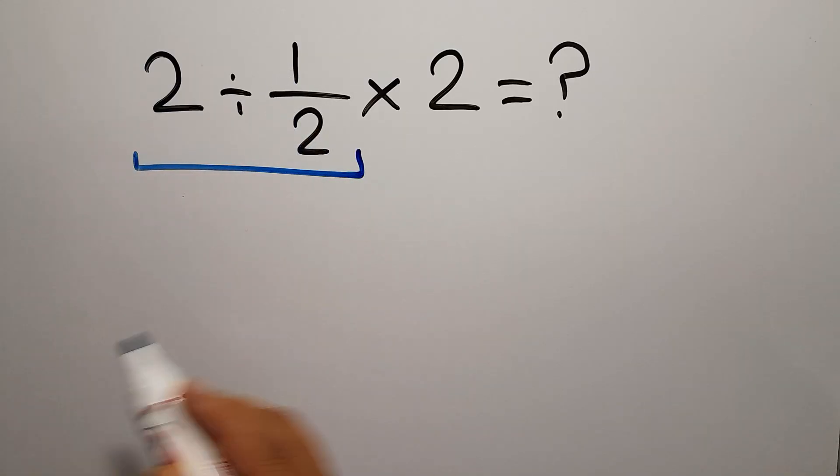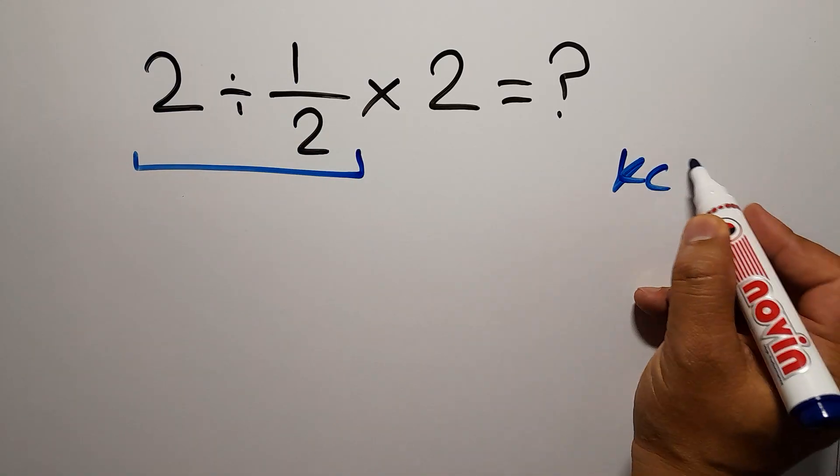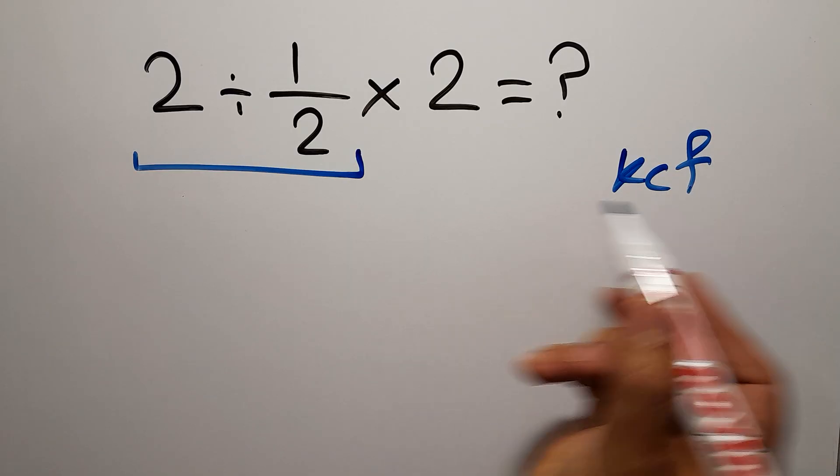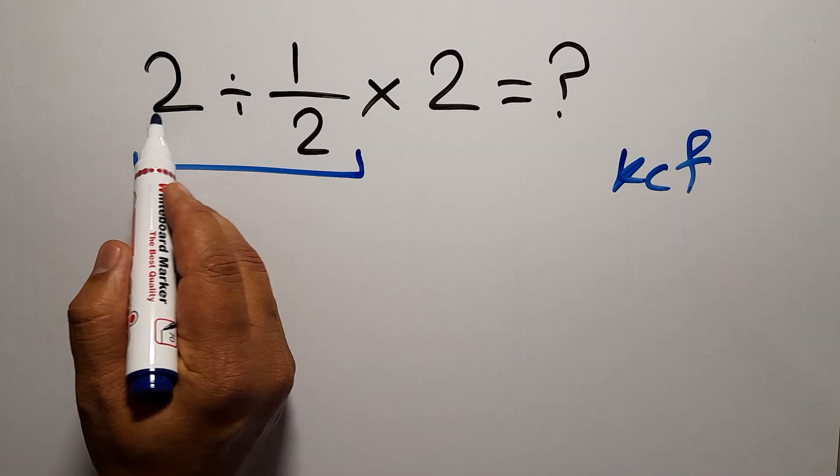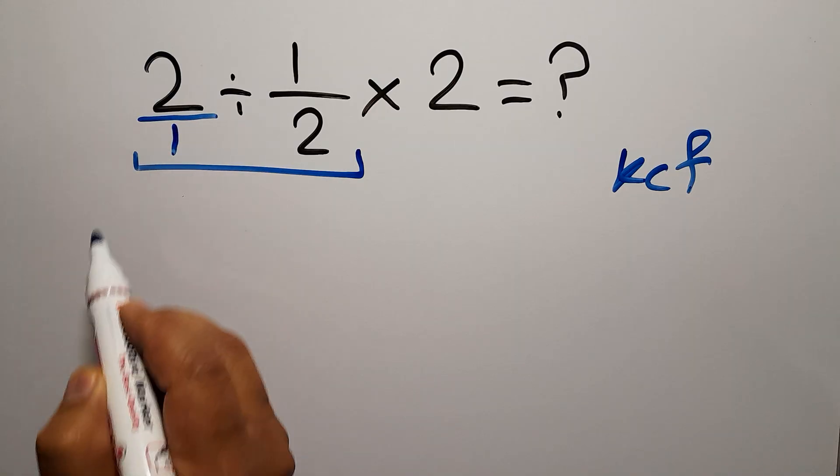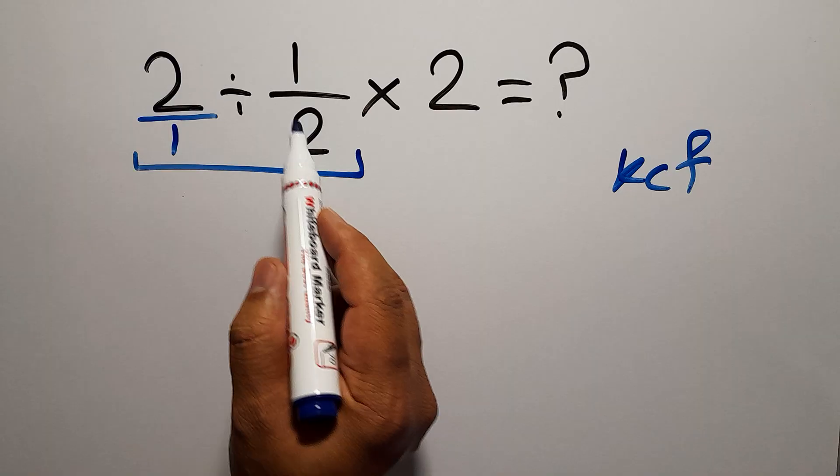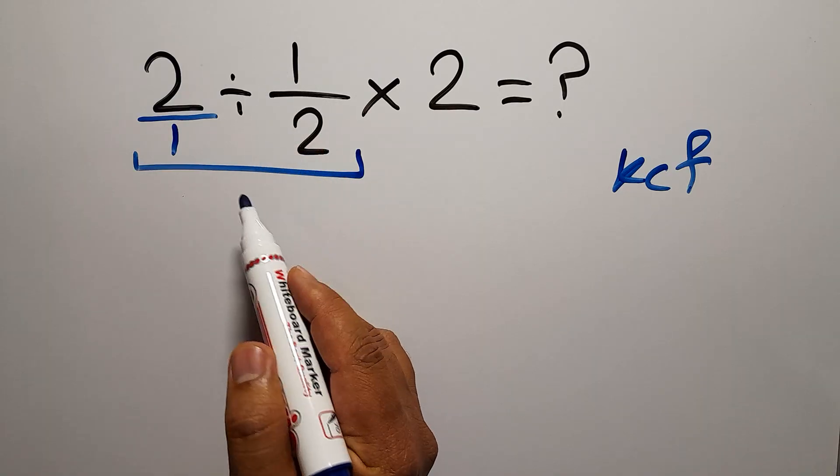According to the KCF rule: K stands for keep, C stands for change, and F stands for flip. Keep the first fraction which is 2/1, change division to multiplication, and flip the second fraction.